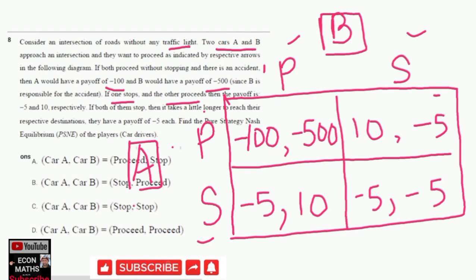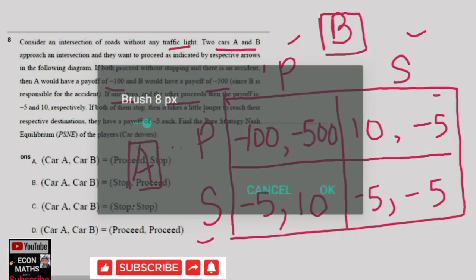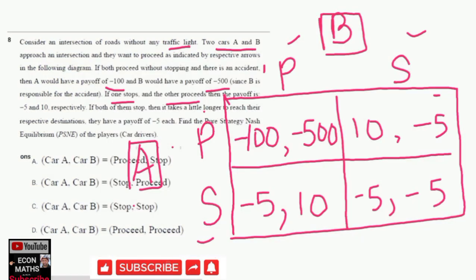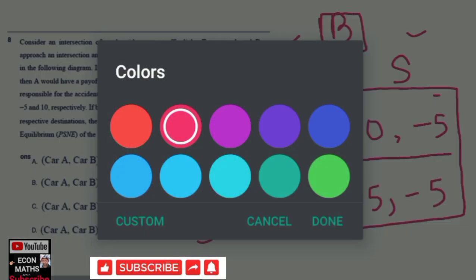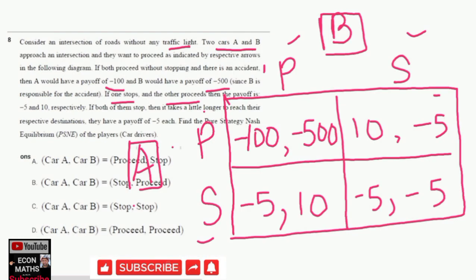The question asks us to find the pure strategy Nash equilibrium of the players. Nash equilibrium refers to a condition in which every party has optimized its outcome based on the other player's expected decision. Now we will identify the Nash equilibrium.